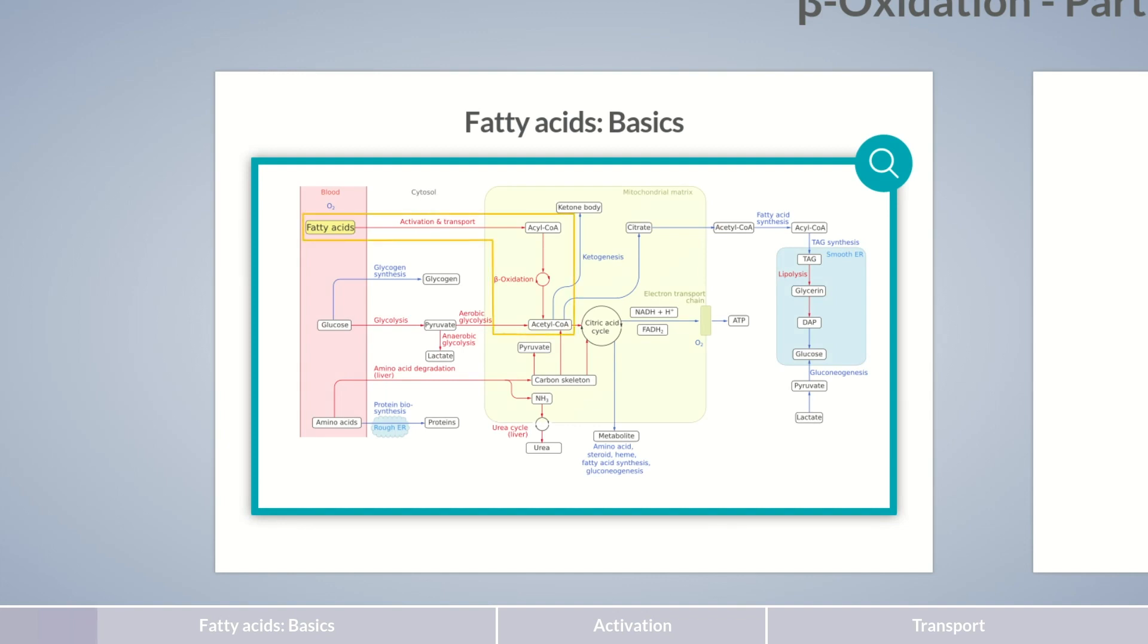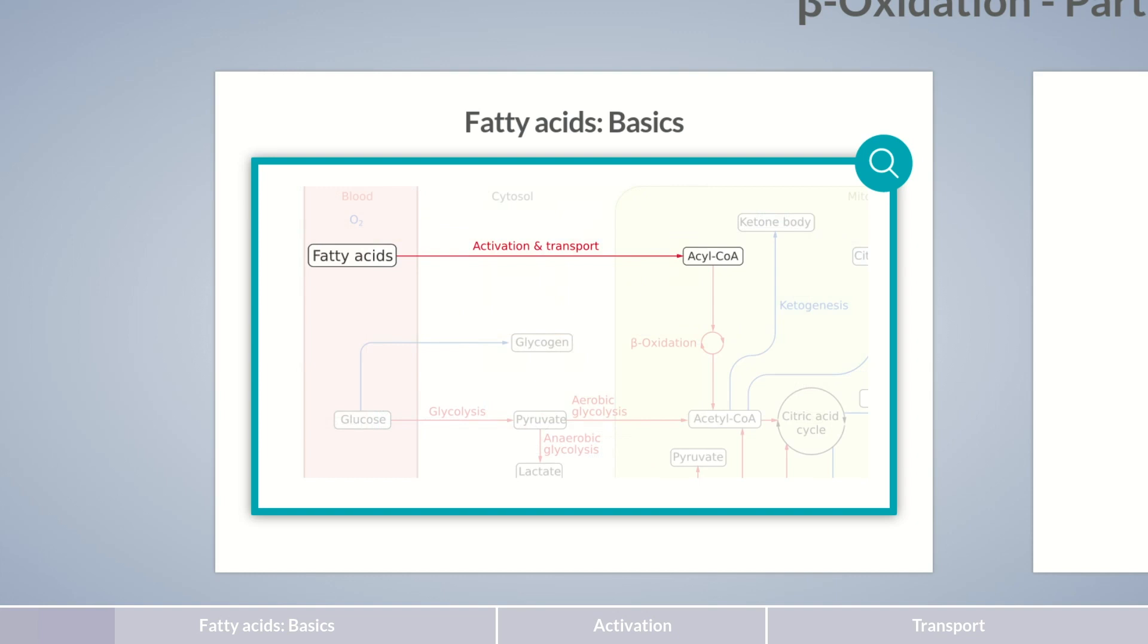Their breakdown helps overcome prolonged periods of fasting. To provide energy, fatty acids are activated, especially in liver and muscle cells, and subsequently transported into the mitochondrial matrix. Once inside, the long linear molecules are cleaved into short C2 units of acetyl-CoA. This cleaving process is called beta-oxidation.